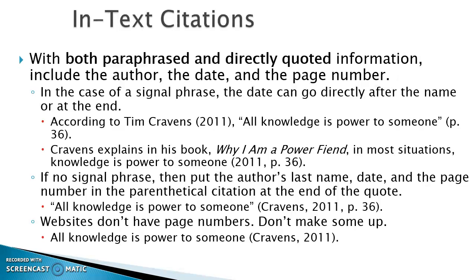If you have a signal phrase, the date goes directly after the name. For example: 'According to Tim Cravens (2011),' and then here's the direct quote — 'All knowledge is power to someone' — and then your page number. You can also do it another way: 'Cravens explains...' and then at the end have the year and the page number. Notice that in APA you use 'p.' and then the number to indicate page number. If you don't have a signal phrase — maybe this is the fourth time you've used the source — you can just use the author's last name, comma, the year, comma, the page number.